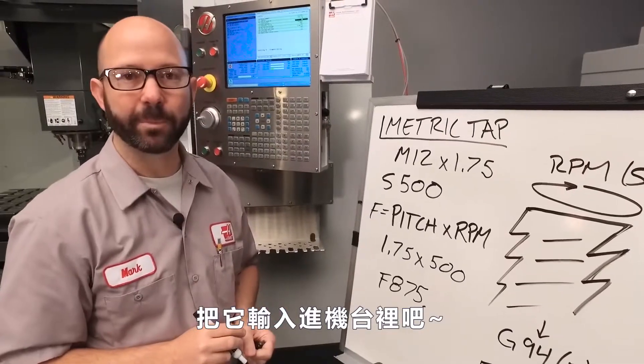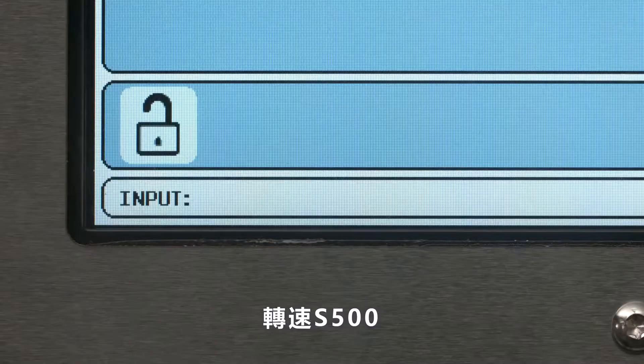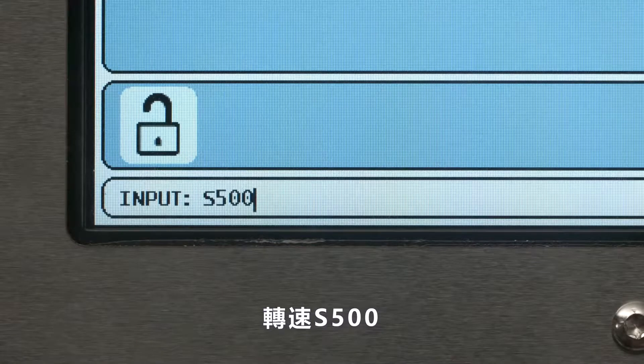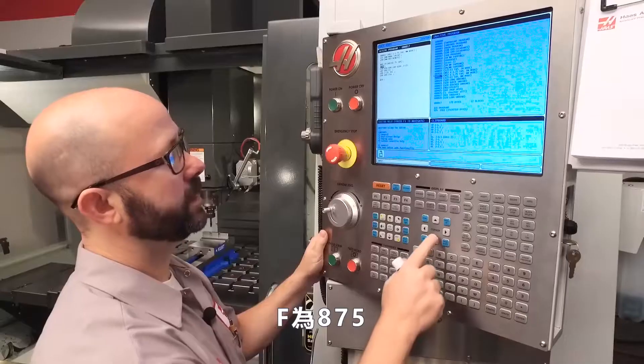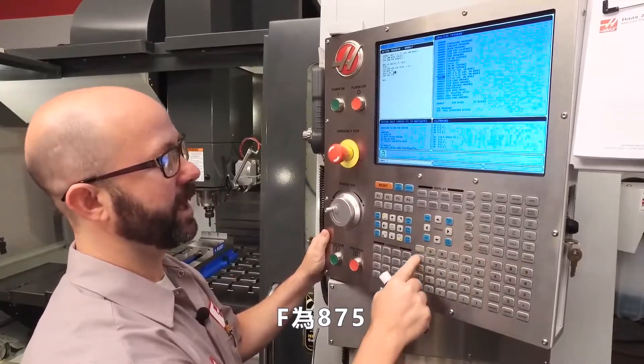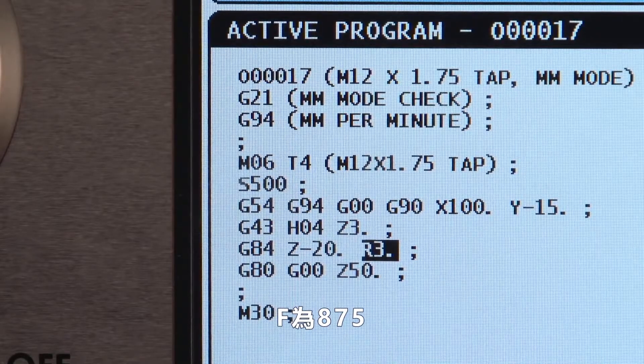Let's go ahead and enter that into our program. I'm going to enter my RPM, S500, and my feed rate, F875 decimal place.